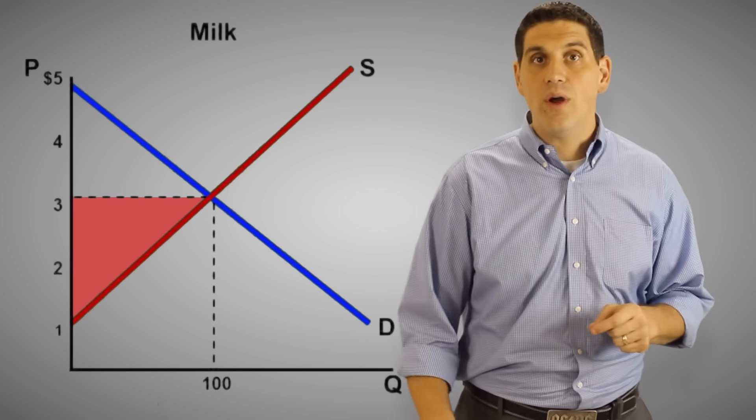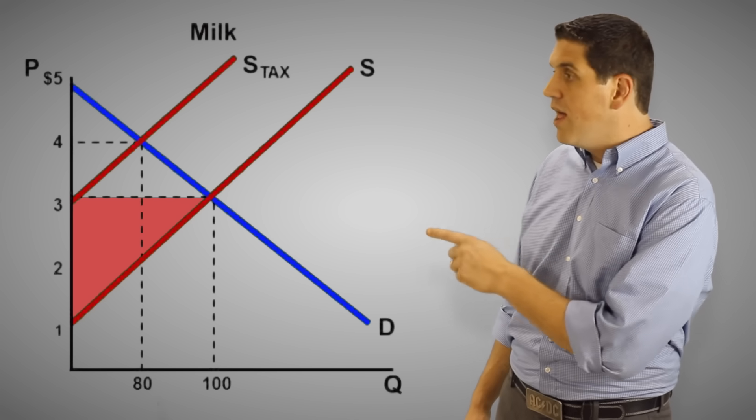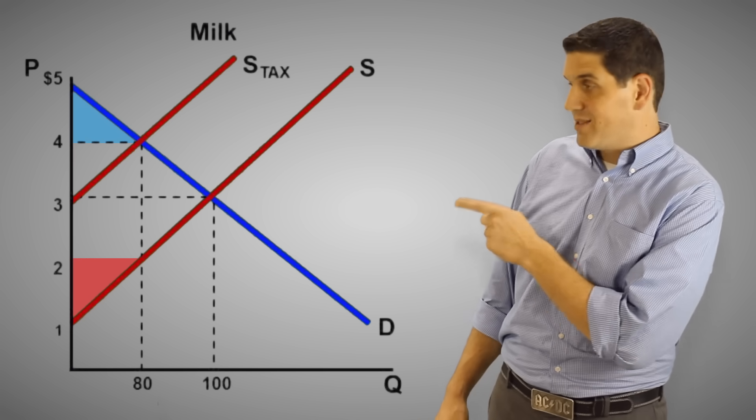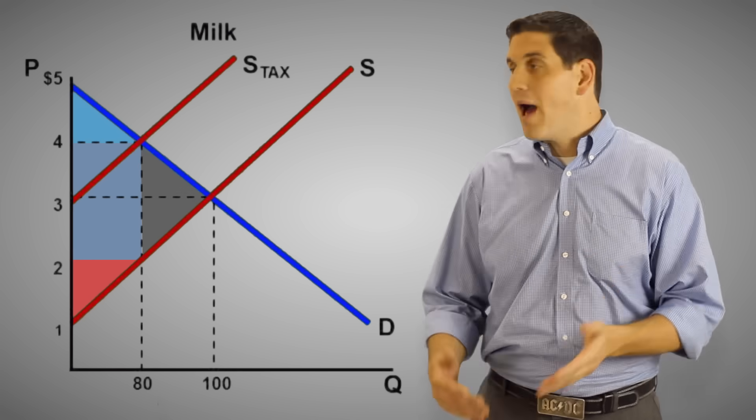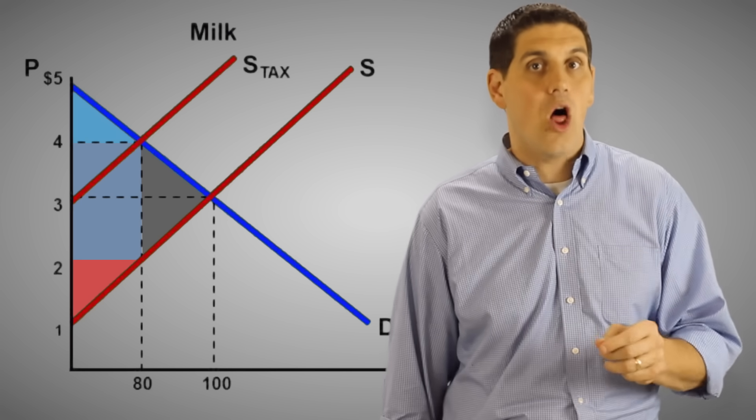Producer surplus also got smaller. When the supply shifted to the left and the price that producers got was only two, that producer surplus is right there. So the consumer surplus is there, producer surplus is there, and that right there is the government tax revenue. So what about this old triangle of consumer and producer surplus that used to exist? Well, that's called deadweight loss.